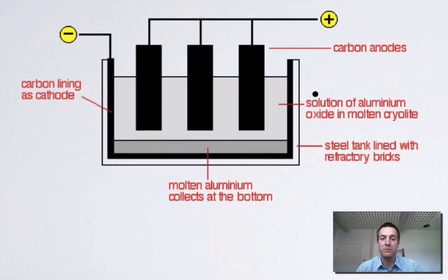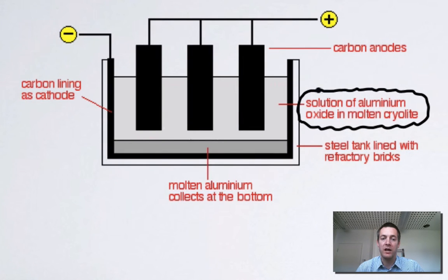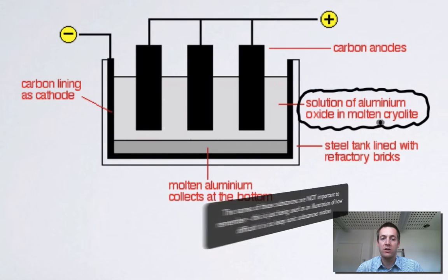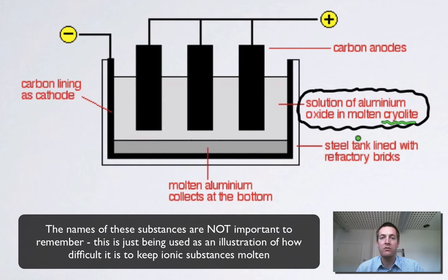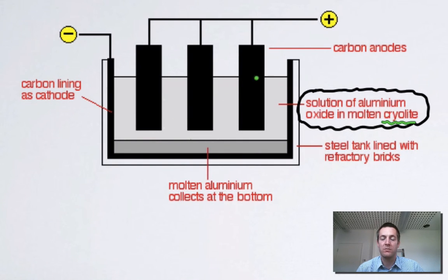If we look at the electrolysis of molten aluminium oxide, which is used to actually manufacture aluminium on an industrial scale, the aluminium oxide is actually dissolved in another substance called cryolite. The reason we do that is because aluminium oxide has got such a high melting point that it would be almost impossible to keep it molten. Most aluminium plants will have their own power station because they can use as much electricity as a small city, and part of the reason for using such high currents is because the flow of electricity through this melt will actually keep it molten.